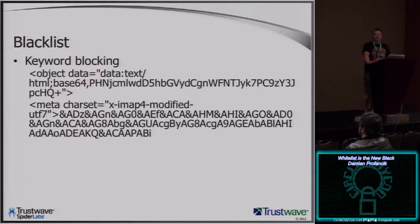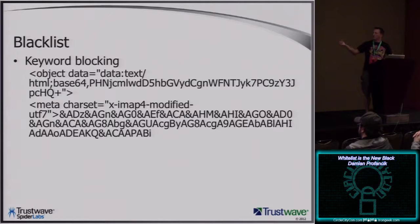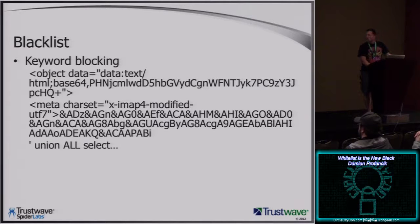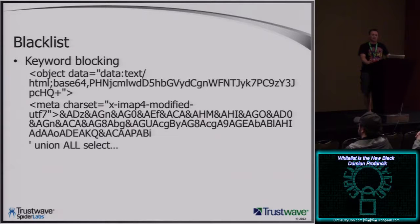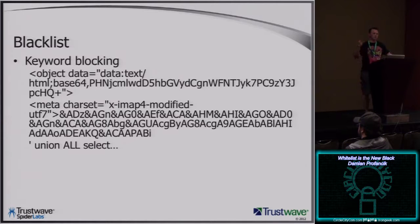Similarly, object tag keyword blocking — this skates by a lot of filters, and your payload is base64-encoded in the value, putting whatever JavaScript you want right there. Character set is also important: if your site is not explicitly UTF-8, you can insert UTF-7, which goes right by your filters. And if the filter is looking for 'union select', 'union all select' will get by it — I use that as a de facto because union all select also bypasses a lot of typecasting problems when appending results from a union onto the regular query.